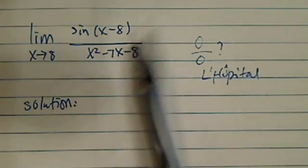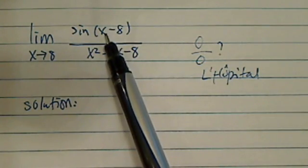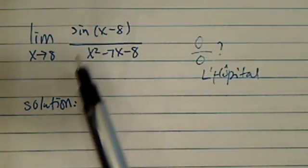Let's check. So on top, when x is close to 8, then you have sine of 0. Yes, indeed, it's 0.